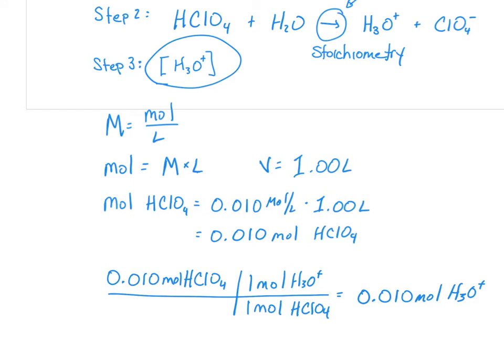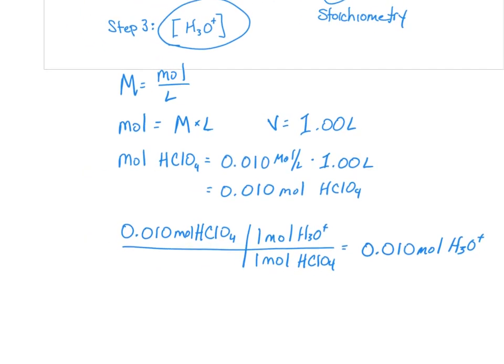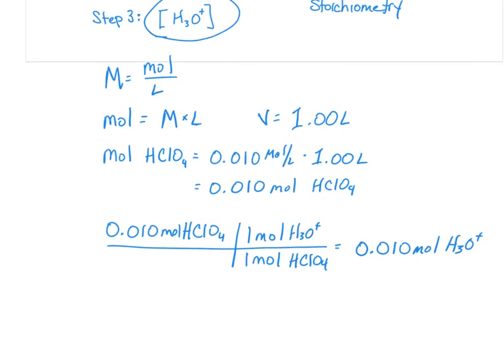Now, this still doesn't answer our question because we want to find the molarity of the hydronium ion. And so to do that, we can divide by that total volume, which we already said was 1 liter. So the concentration of H3O+ is going to be equal to 0.010 moles divided by 1.00 liters, which is the same thing as 0.010 molar H3O+.